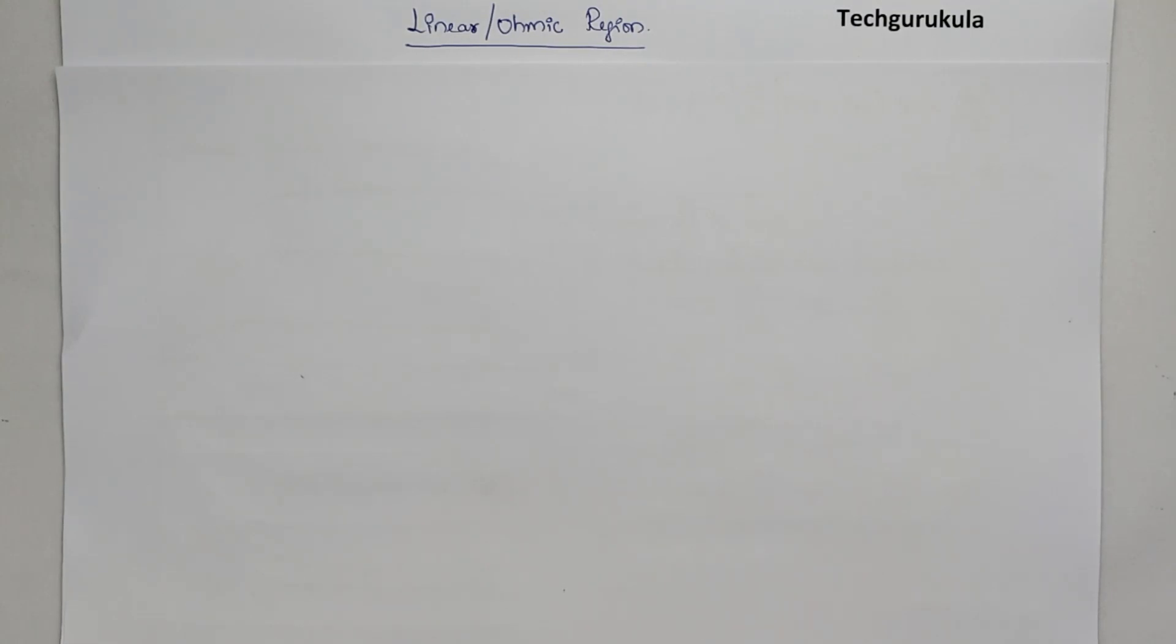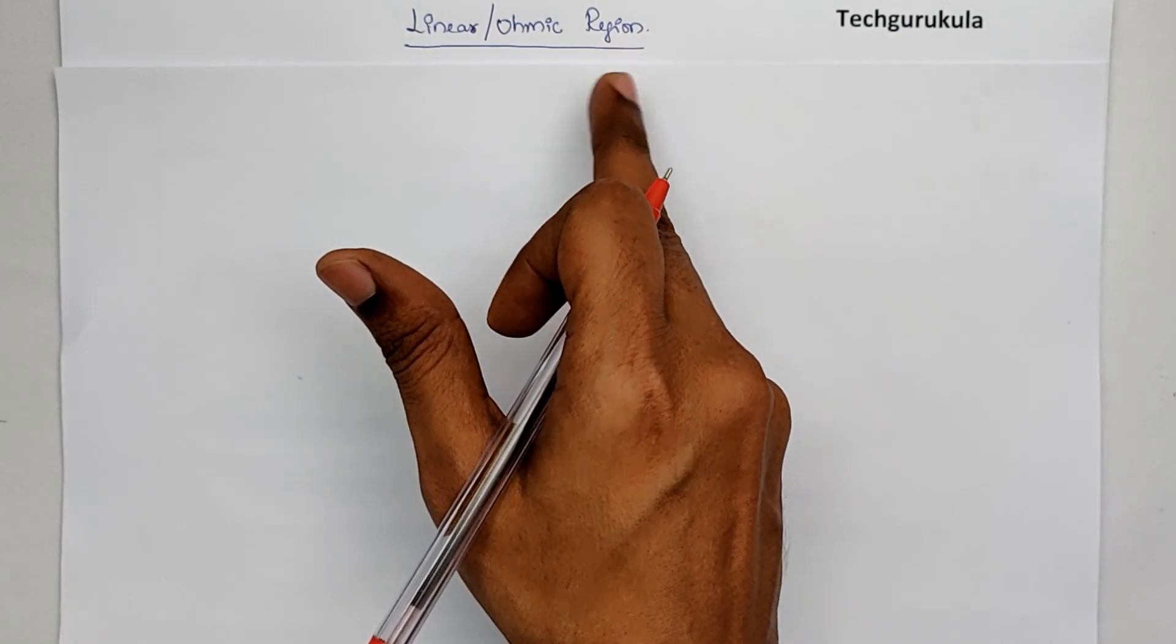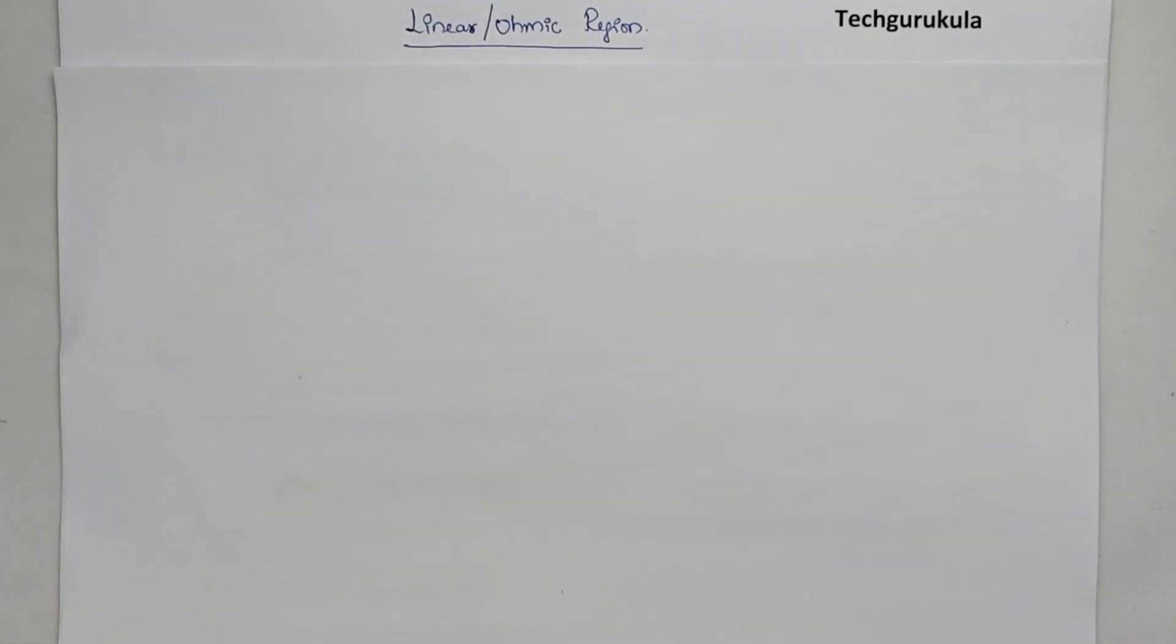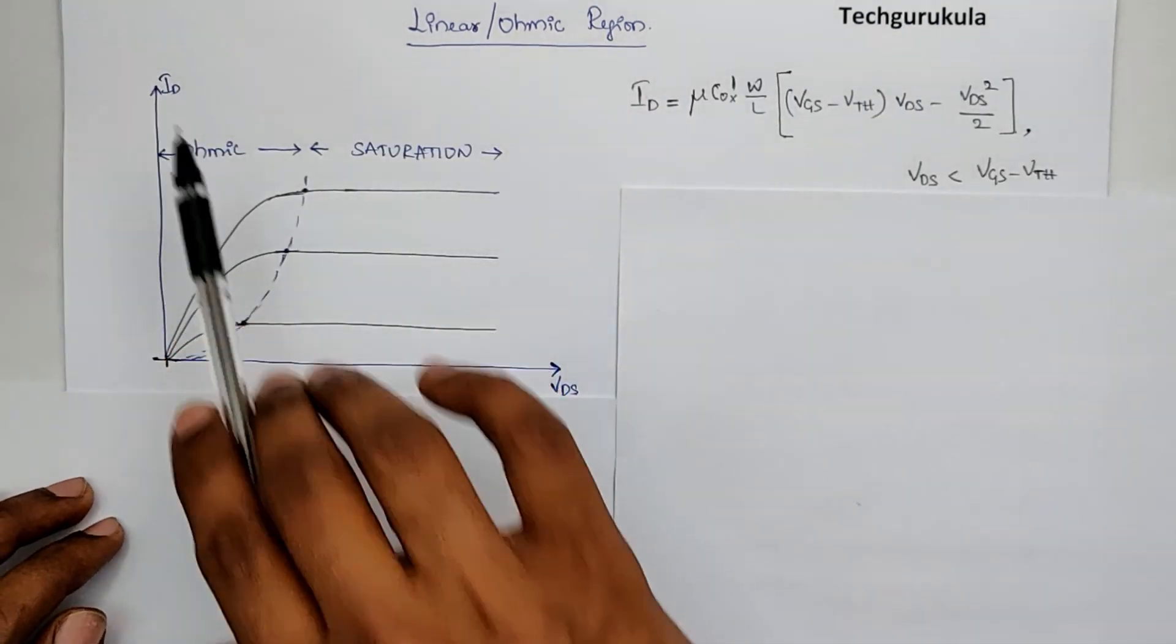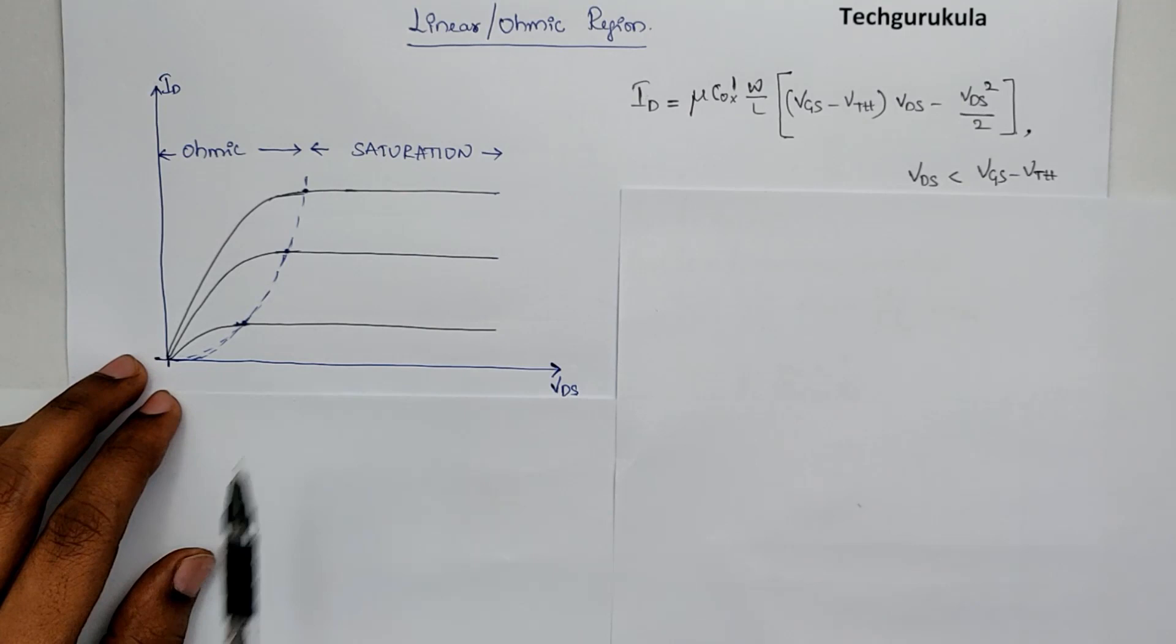In this video, we're going to be very specifically looking at the linear region or ohmic region of a MOSFET and its small signal parameters. The ID versus VDS characteristics, as we have discussed in previous videos, look like this.